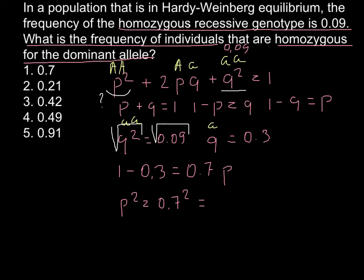And this is going to be 0.49. And let's check, we have such an answer, answer number 4. The frequency of the dominant allele would be 0.7, and the frequency of the homozygous dominant would be 0.49.